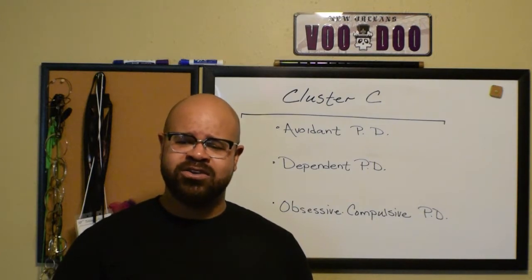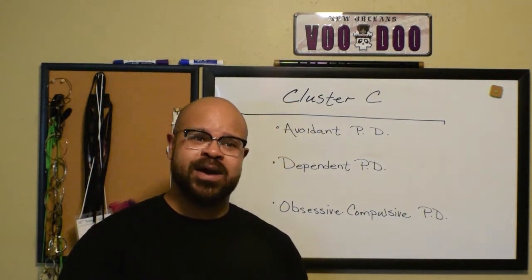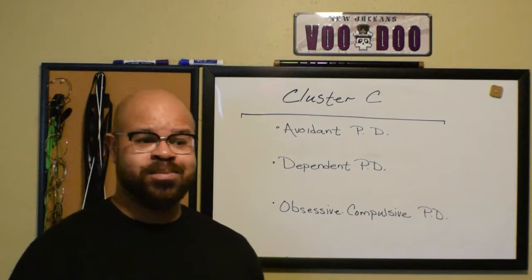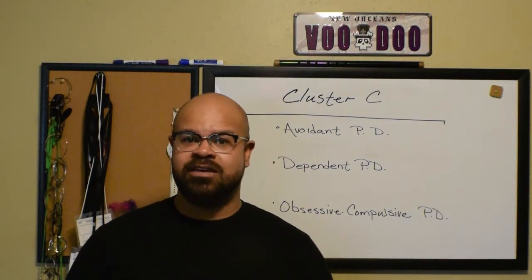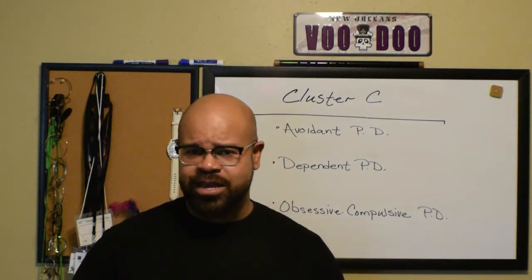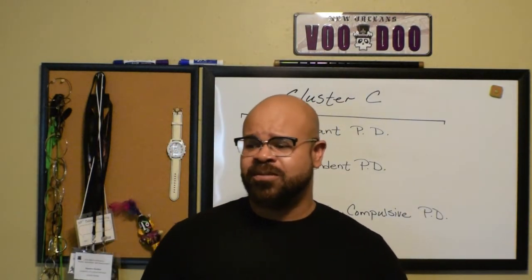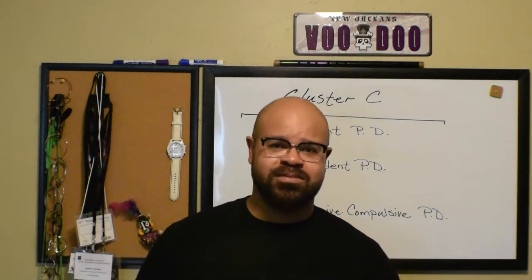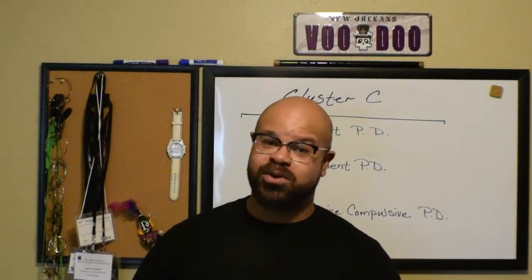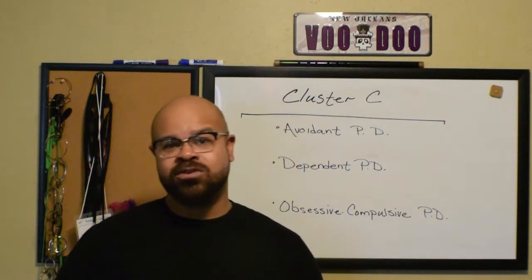Dependent personality also shares some similarities with borderline personality disorder — specifically the anxiety about the relationship itself. With regard to their co-dependent, there's a constant question: what do I have to do to make sure this person doesn't leave? Unlike the borderline personality, they're not going to resort to really drastic, frantic means to keep those people around — they're not going to threaten suicide or damage property. Those types of frantic behaviors are not typical here.